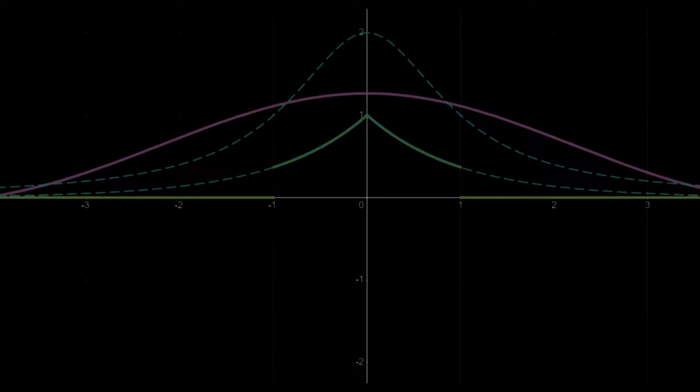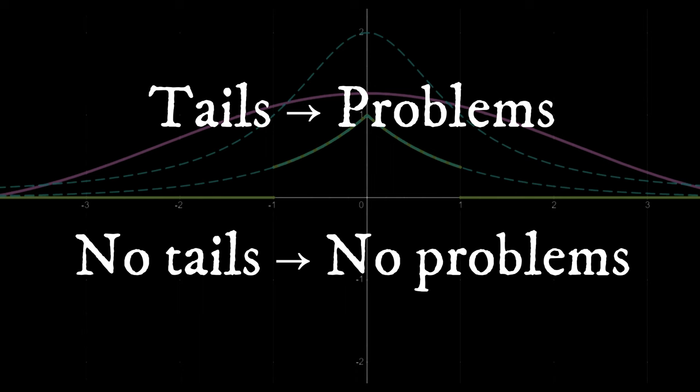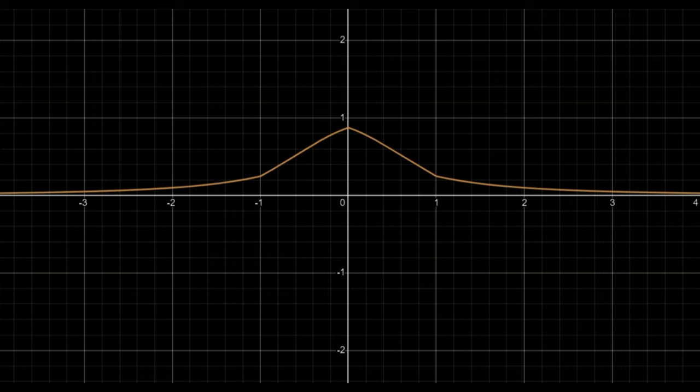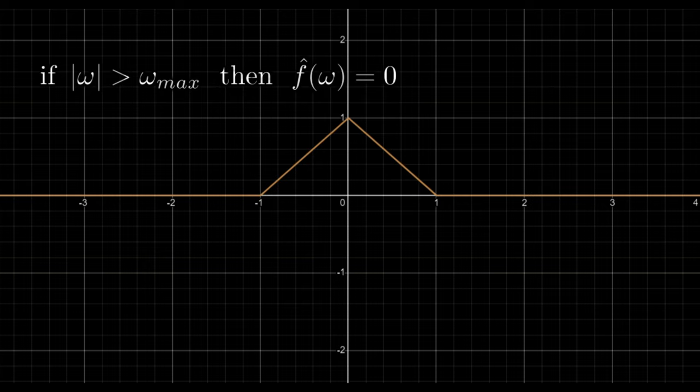But if both of these problems are caused by the tails, we can get rid of the problems if we get rid of the tails. If we require that the signal's FT won't have a tail, which means that there exists some frequency omega max, so the FT equals zero for all frequencies greater than omega max, those two fundamental problems disappear.